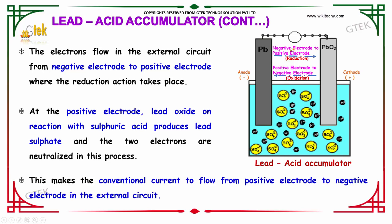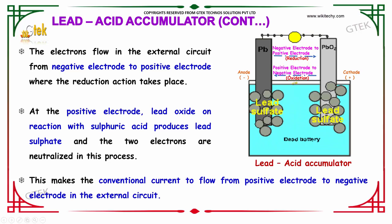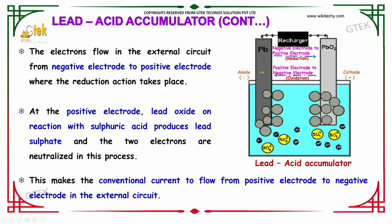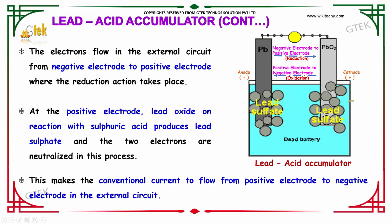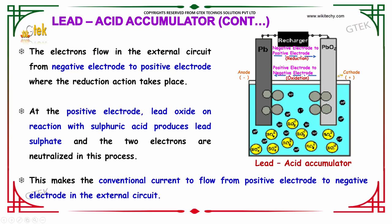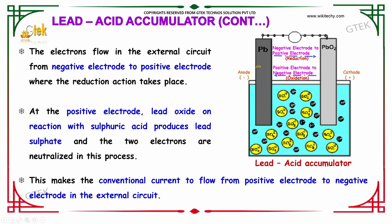From the positive electrode to the negative electrode, oxidation is happening. At the positive electrode, lead oxide on reaction with sulfuric acid produces lead sulfate and two electrons are neutralized in this process. This makes the conventional current flow from the positive to the negative electrode in the external circuit.